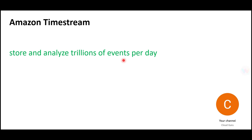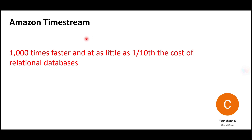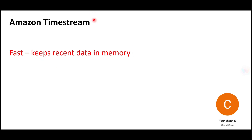You can imagine why we cannot save this in a relational database — when a BI application fires queries, relational databases like SQL Server or Oracle will die. Timestream gives you a thousand times faster performance compared to relational databases, and it costs one tenth. It is fast because it keeps the recent data in memory.